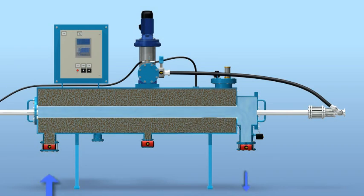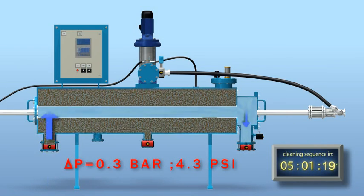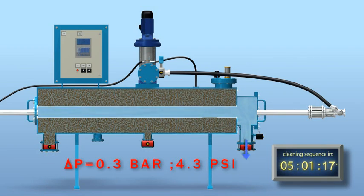The filter cake and the trapped suspended solids gradually increases filter differential pressure. The control system activates the self-cleaning sequence at a preset pressure differential level, or by a preset timer, whichever comes first.